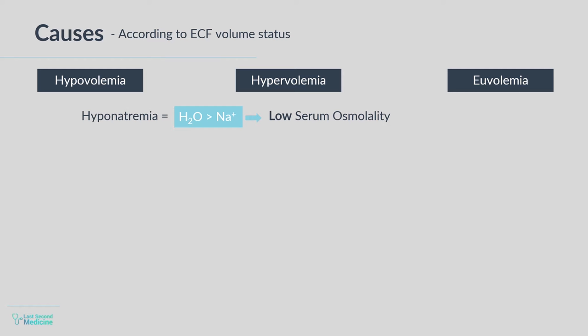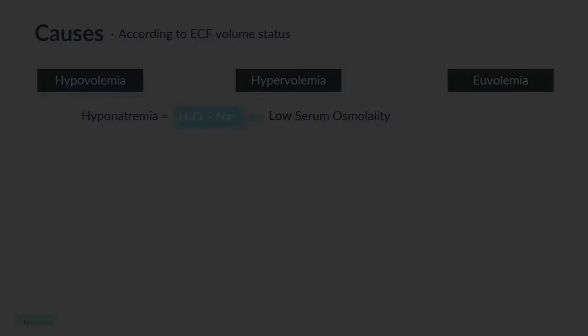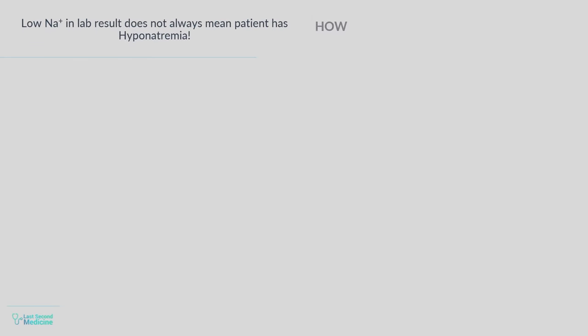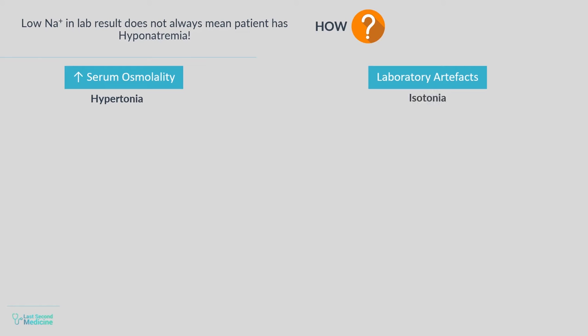Before proceeding to group the causes according to volume status, it is pertinent to note that sometimes you may get hyponatremia in test results despite the patient actually having a normal sodium level. This may occur either due to increased patient's serum osmolality, or may occur due to lab artifacts.